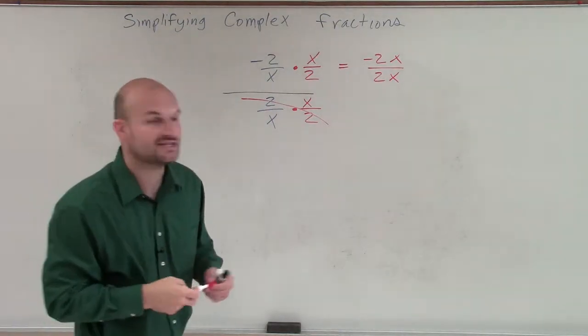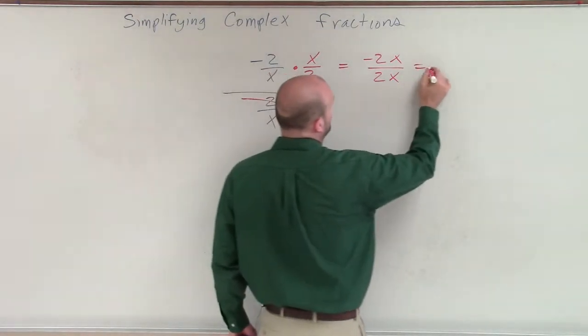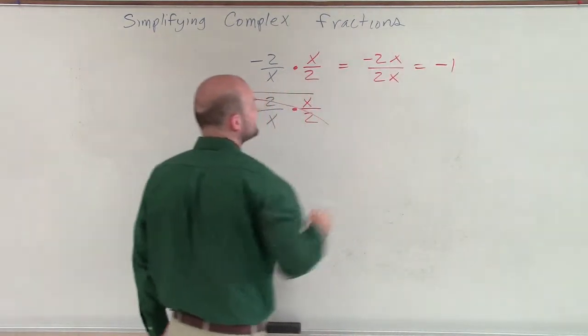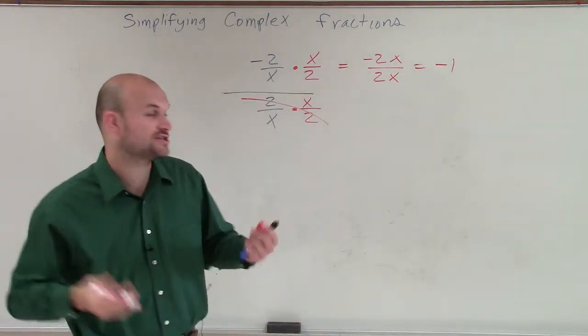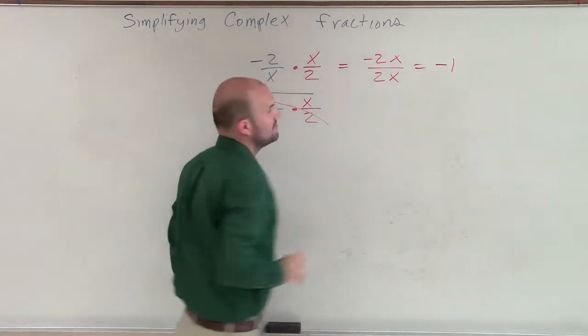Well, here we can see that negative 2 divided by 2 is going to equal negative 1, and then x divided by x equals 1. And negative 1 times 1 is just going to equal negative 1. So that's going to be your final answer.